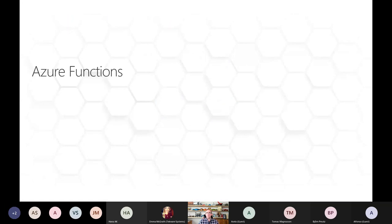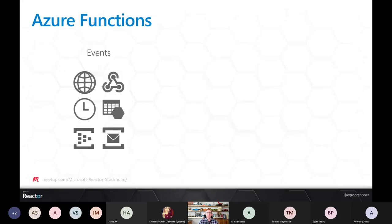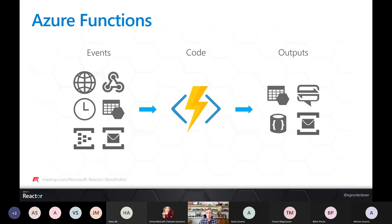Azure Functions is really about this: we have an event — a timer trigger, something placed on a Service Bus queue, something changed in storage — something happened, and we run some code. We've seen different examples over the last few weeks, like encrypting something with PGP. We run a bit of code and then we have some output: we do a response to our calling service, or store something in Cosmos DB, Service Bus, blob storage. It's very easy to set up using bindings — I can bind to Cosmos DB without thinking about all the plumbing. I can just focus on my little piece of code and implement something scalable and easy.